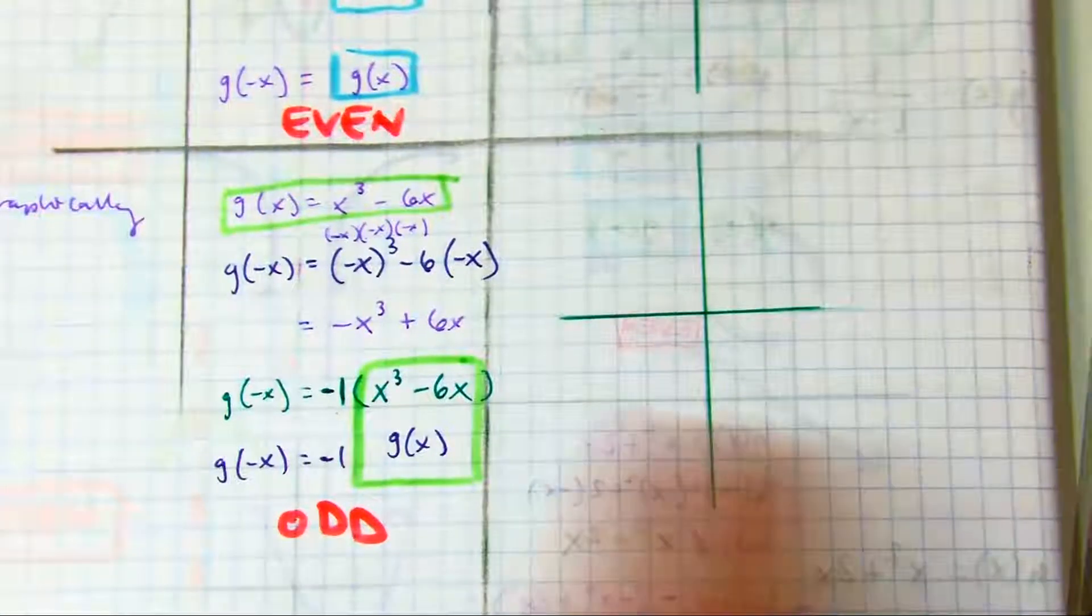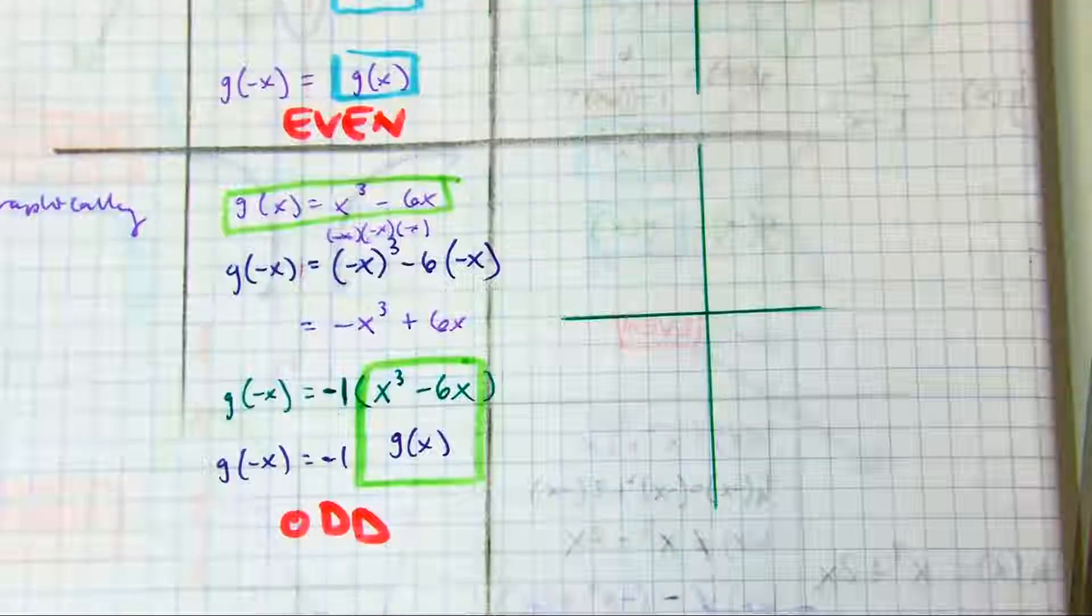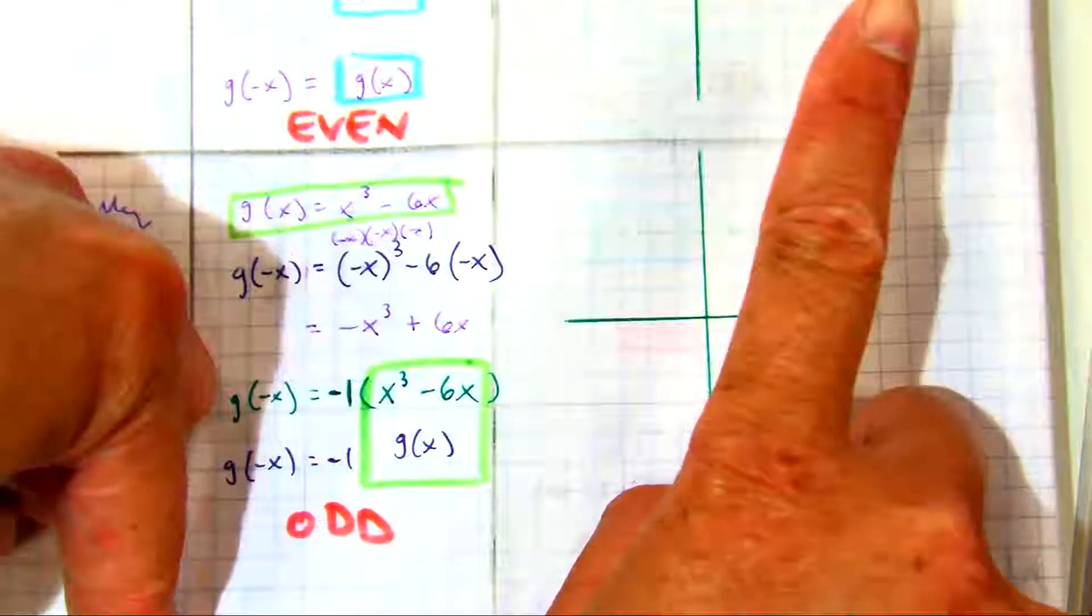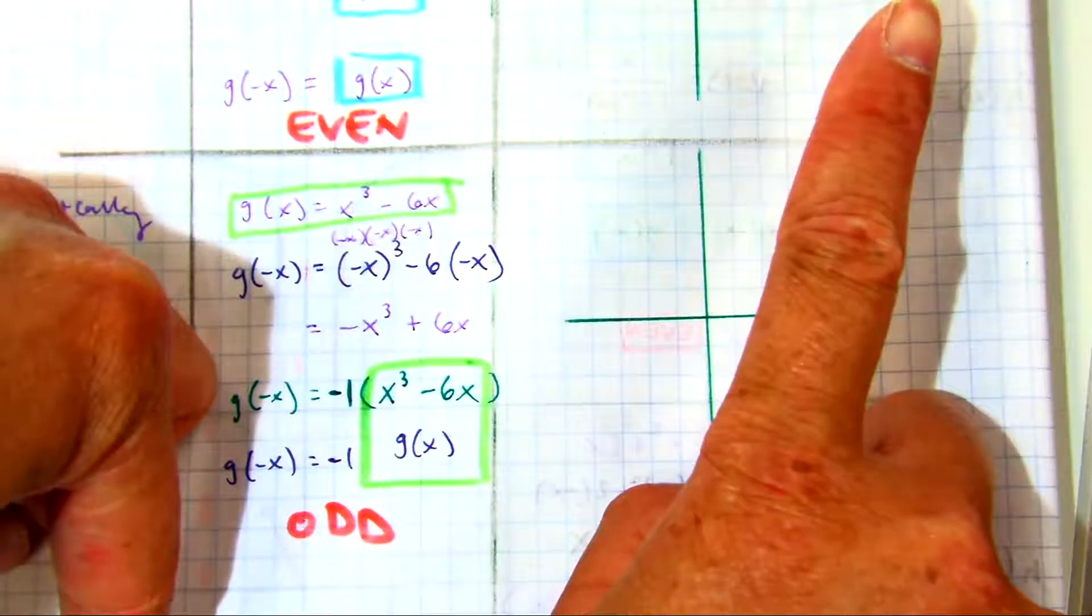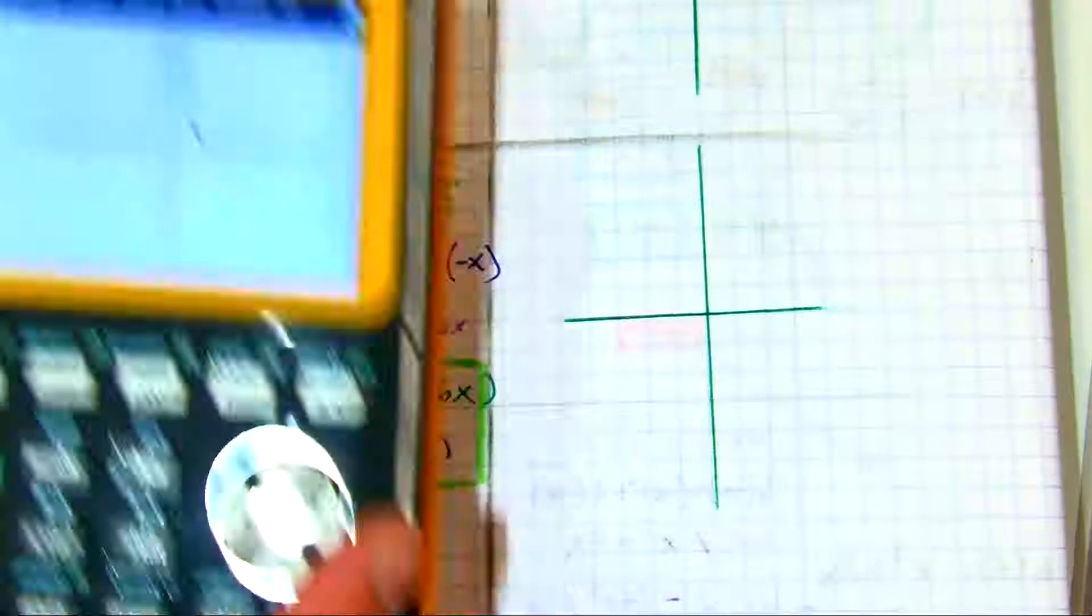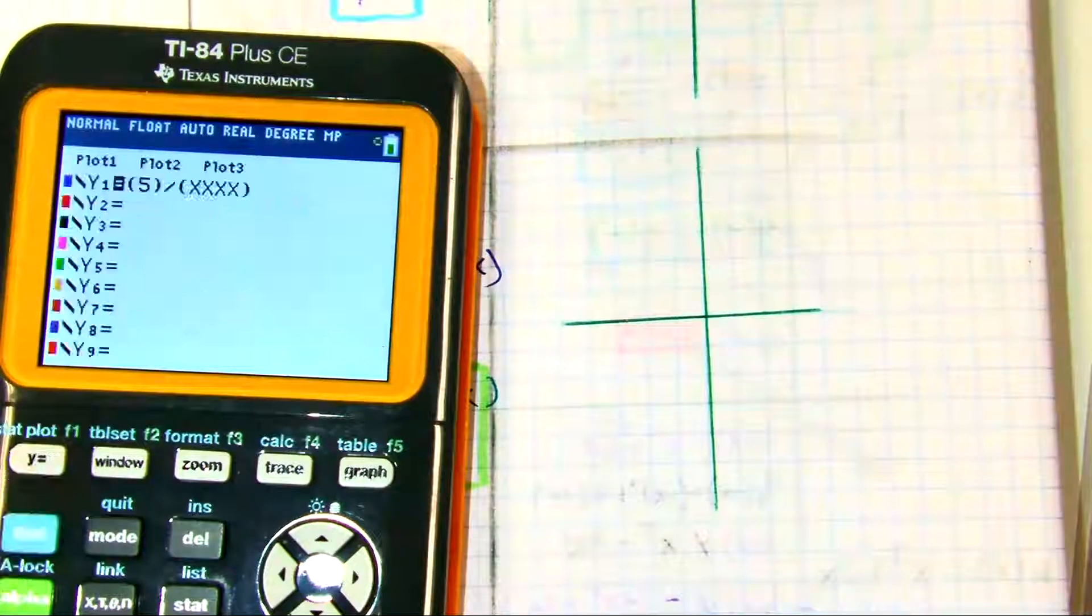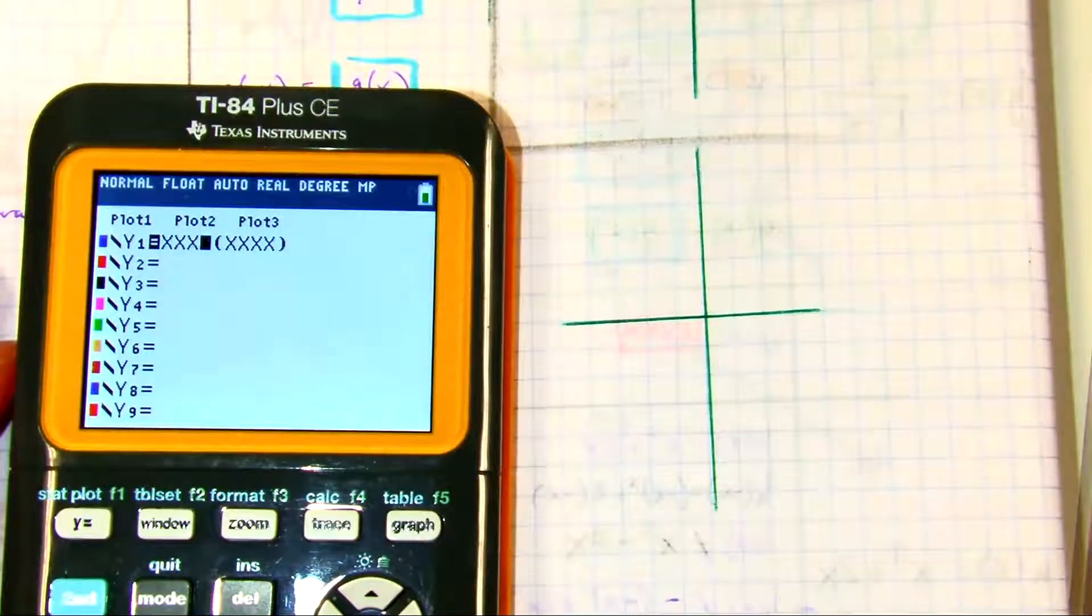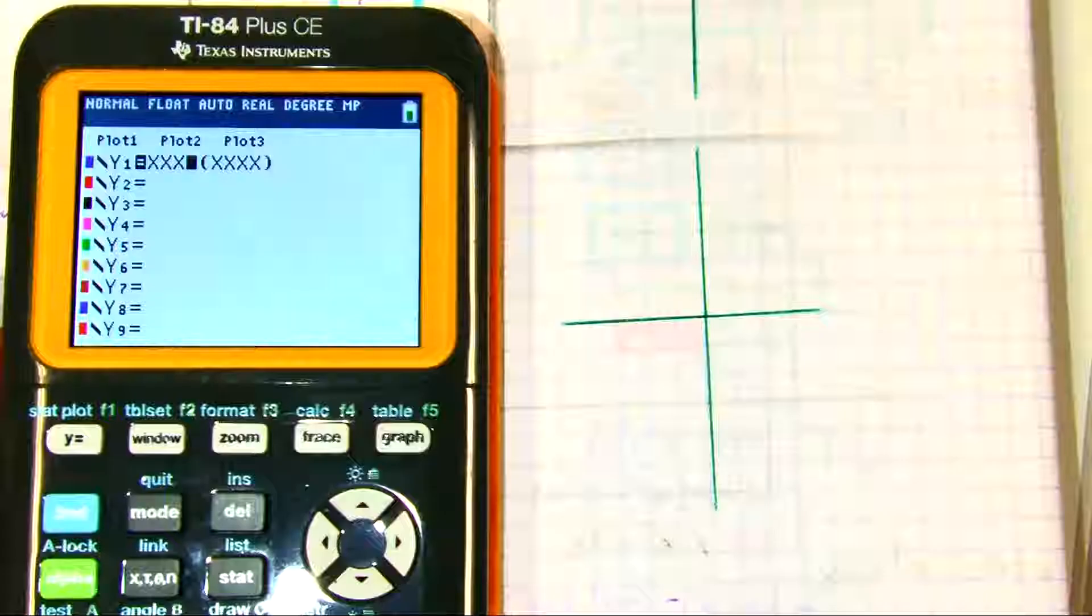I know the degree is odd, so I know it's gonna be one starts up, one starts down. Right? Just like a linear x to the first power.